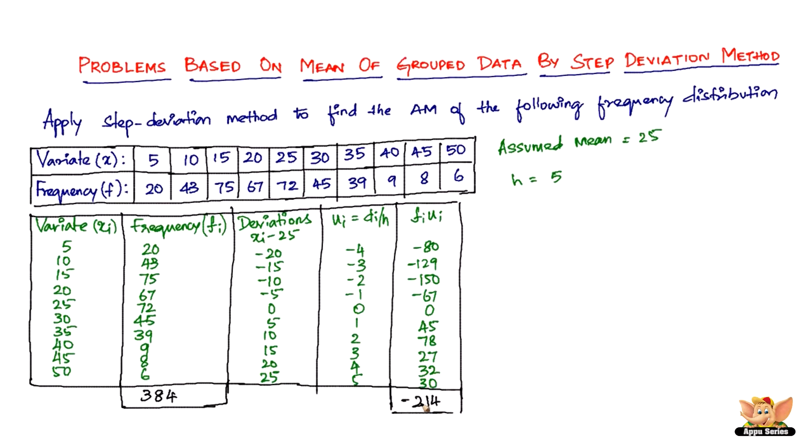Now all we have to do is substitute in the formula, which is x̄ equals A plus H times 1 by n summation of F_I U_I. So assumed mean is 25, H is 5, and 1 by n is 1 by 384 times negative 214. Calculating this, we get 25 minus 2.786 which equals 22.214.